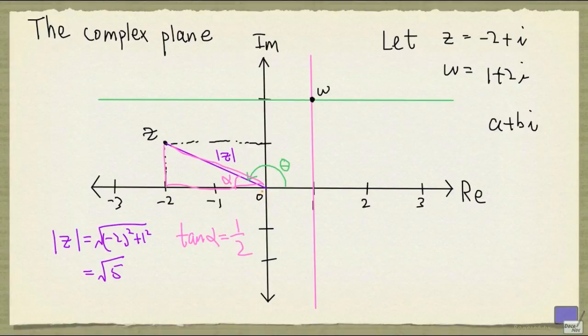Now, once you have alpha, you can calculate theta, because theta is given by pi radians minus alpha.